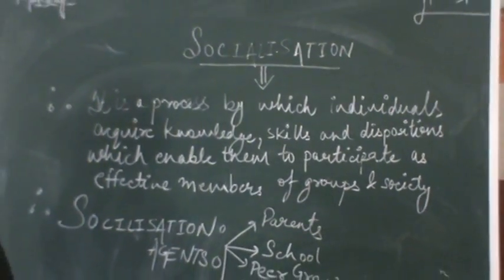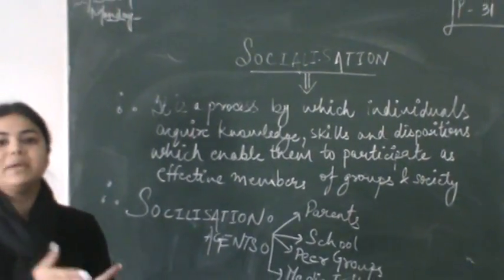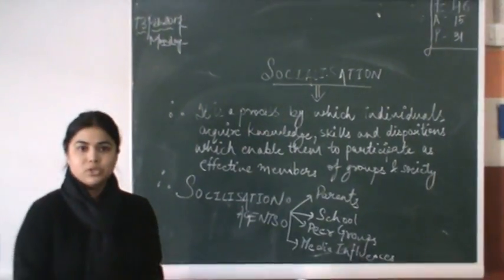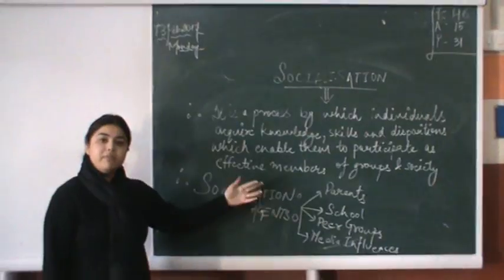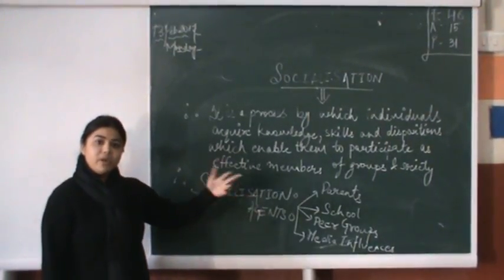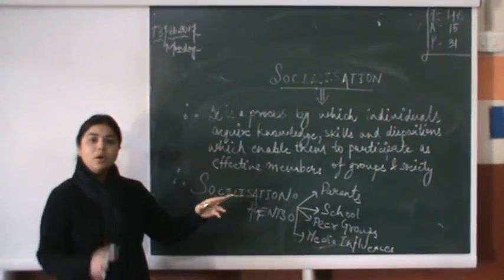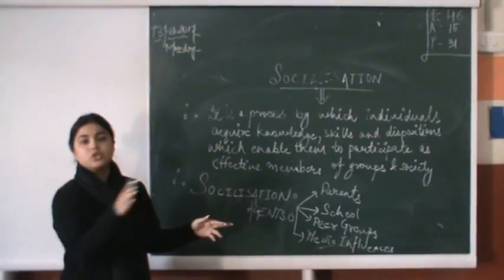To adjust in a group or society, there has to be a particular behavior under which we can be categorized into that group or society. A lot of socialization agents play a major role in modifying behavior or teaching us what is appropriate.